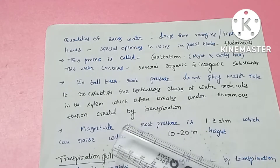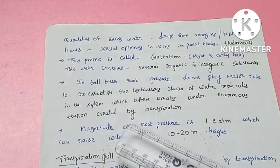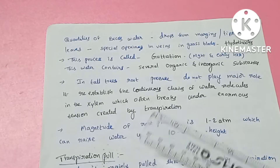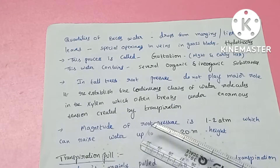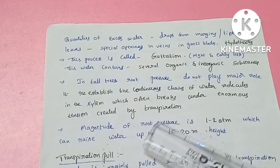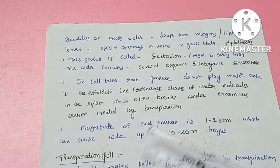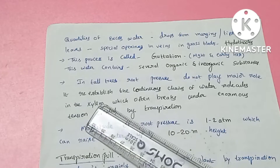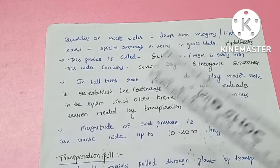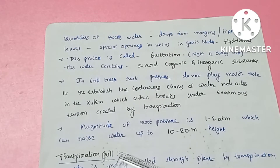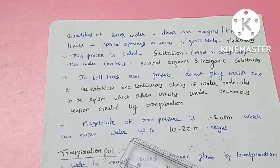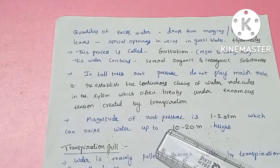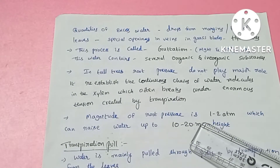They form a continuous chain. In transpiration, tension creates breaks in the chain. These breaks are re-established. Root pressure helps restore the chain, and the magnitude of root pressure also plays a role.